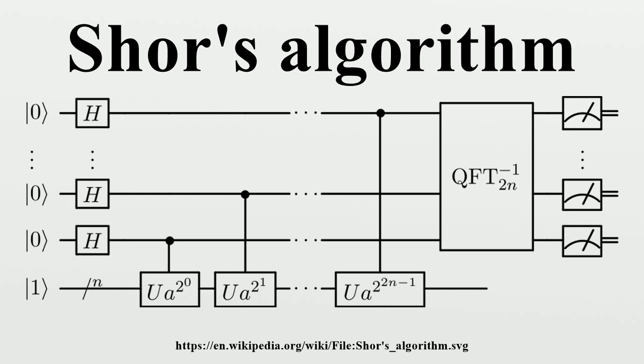Check classically if f(s)=1. If so, we're done. Otherwise, classically obtain more candidates for r by using multiples of s, or by using other s with d/s near y/q. If any candidate works, we're done. Otherwise, try again starting from step 1 of this subroutine.